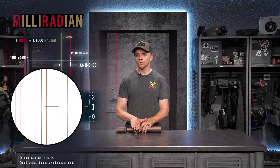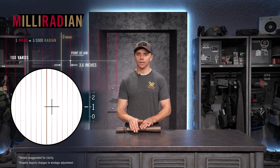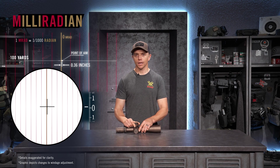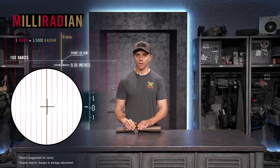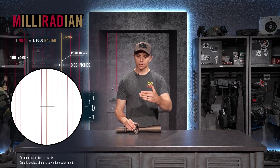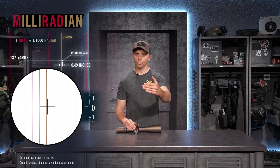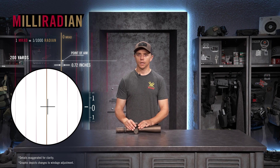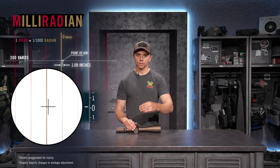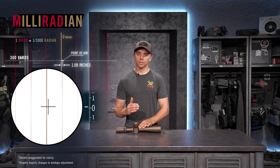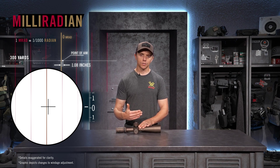It's important to understand how these units of measure break down when engaging targets at distance. Since MRAD is an angular unit of measure, that tenth-of-a-mil adjustment that was 0.36 inches at 100 yards becomes 0.72 inches at 200 yards, and 1.08 inches at 300 yards — it grows greater with distance.